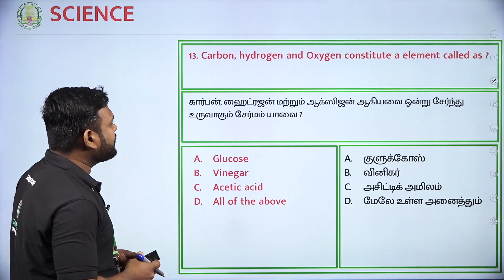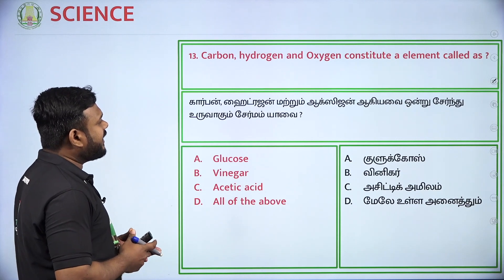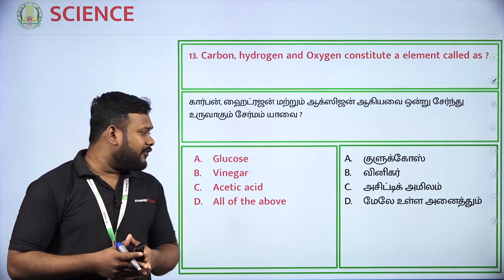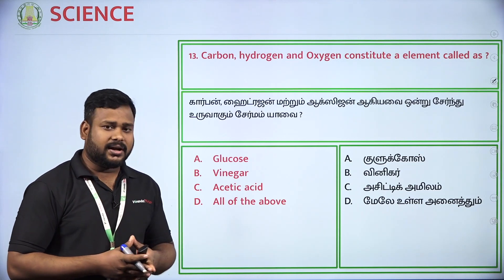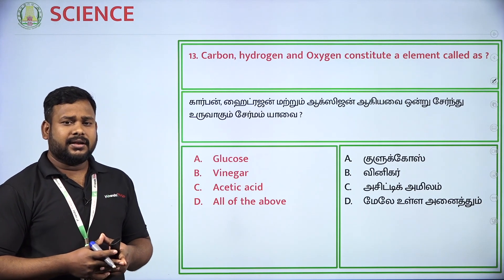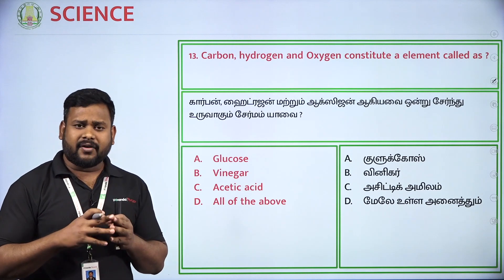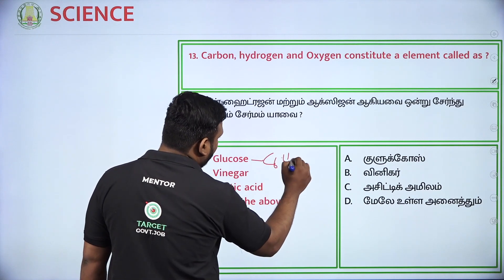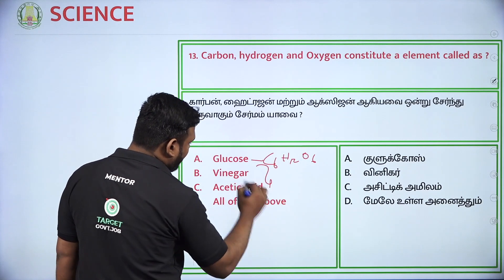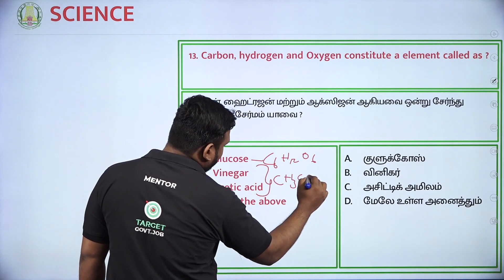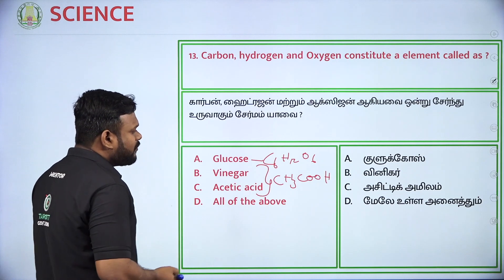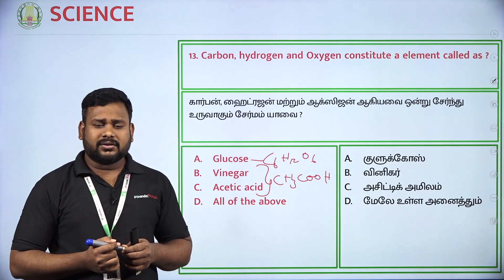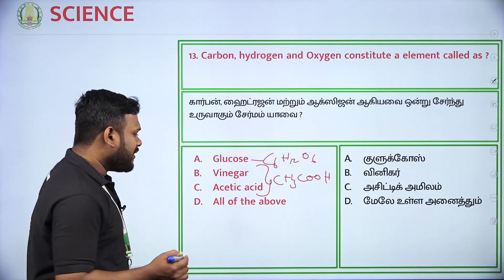Which compound contains carbon, hydrogen, and oxygen? Options are glucose, vinegar, acetic acid. All three — glucose, vinegar, and acetic acid — contain carbon, hydrogen, and oxygen. So option D — all of the above — is the correct answer.